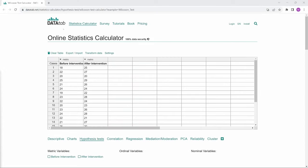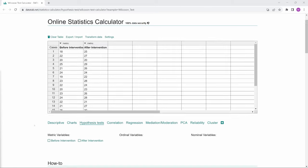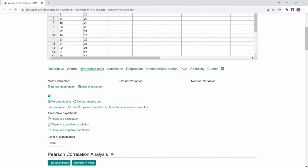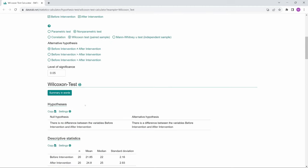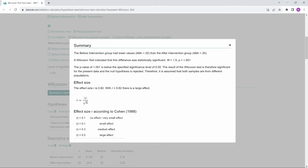Of course, when you calculate a Wilcoxon-signed rank test online with DataTab, the summary in words is automatically generated for you. Just copy your data into this table, select your variables, click on Non-parametric and Wilcoxon test, and then click on Summary in words.